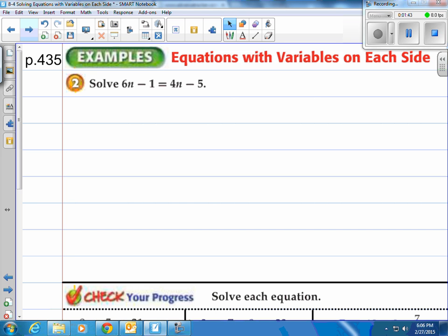How about an equation like 6n minus 1 equals 4n minus 5. You notice we have 6n on the left, we have 4n on the right, we also have some other things here. But step one is, rewrite the problem.